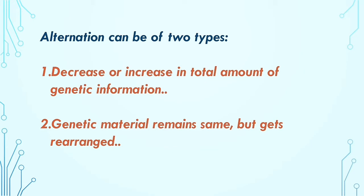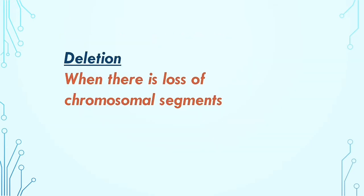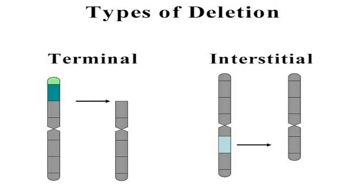The first type is deletion. When there is a loss of a chromosomal segment, that kind of variation is known as deletion. On the basis of chromosomal loss, deletion can be of two types: terminal deletion and interstitial deletion.